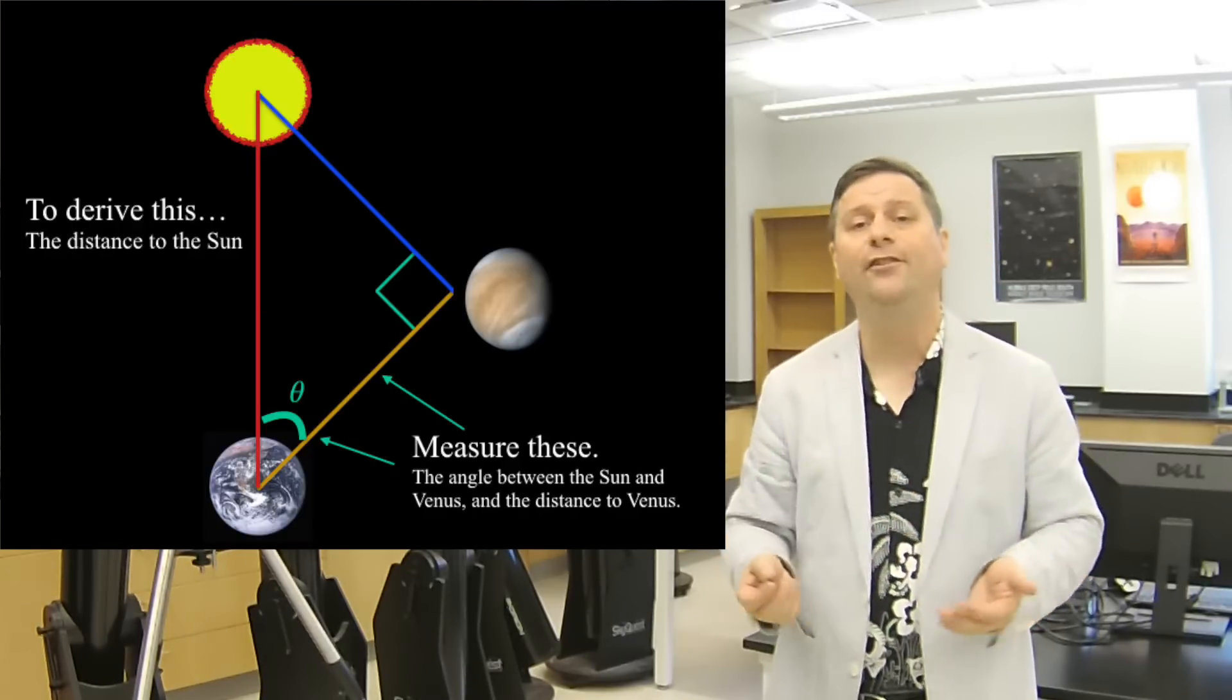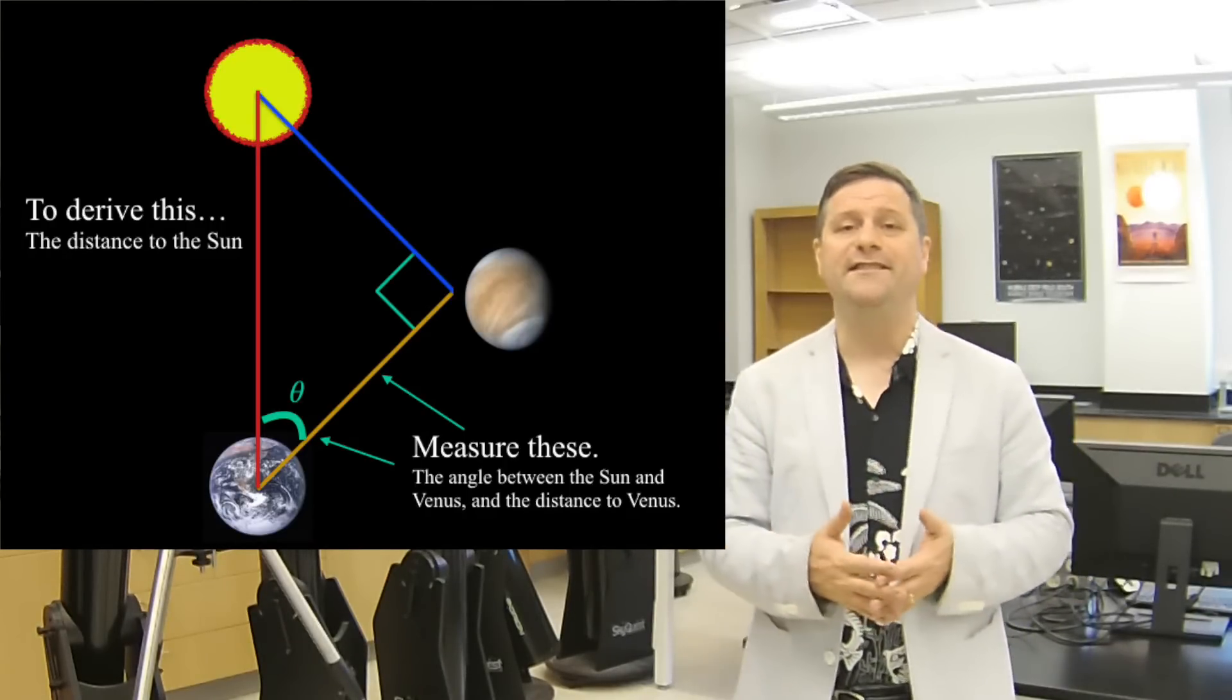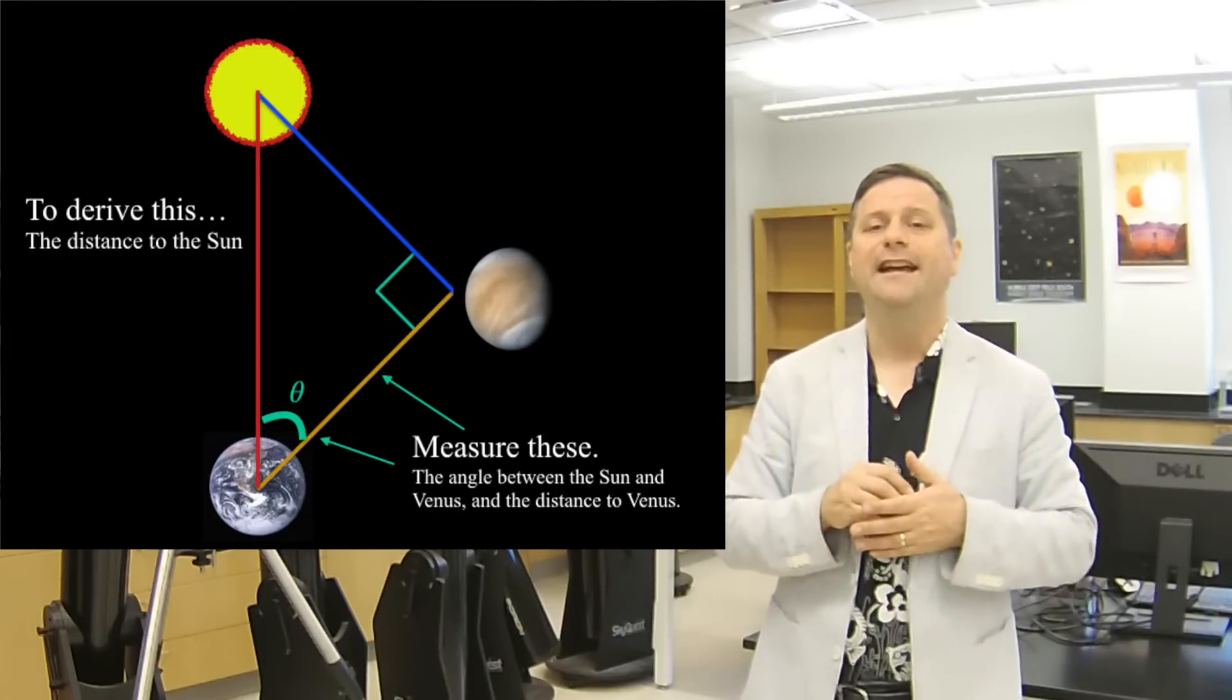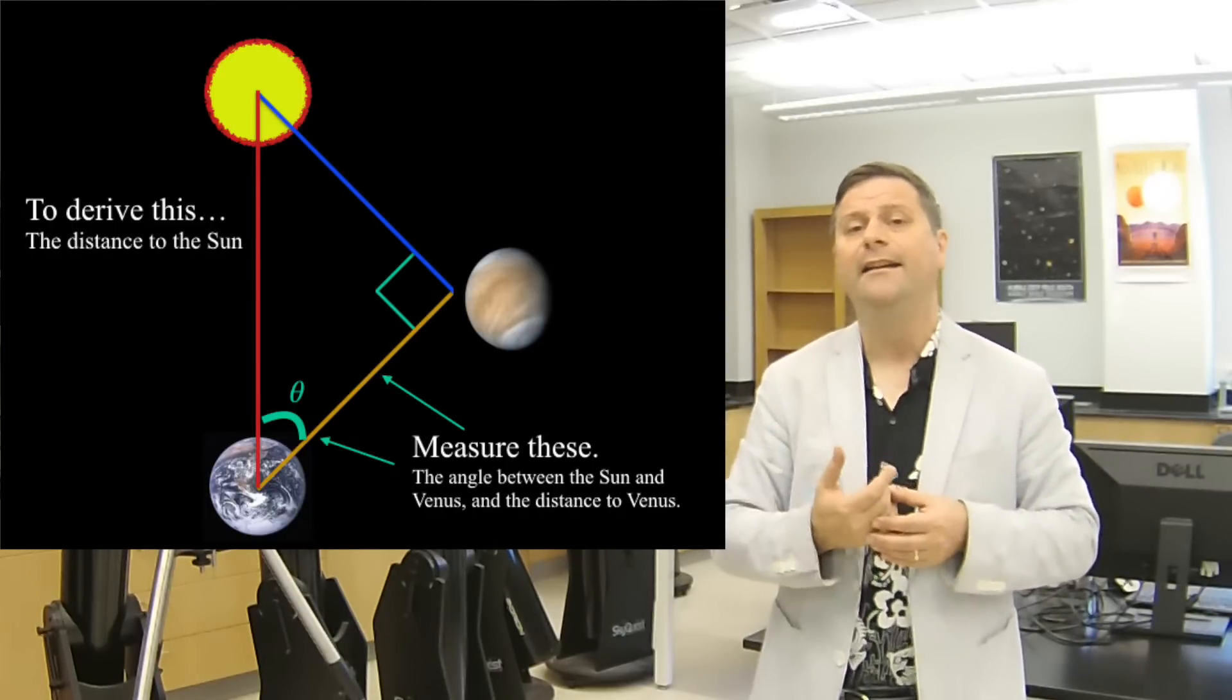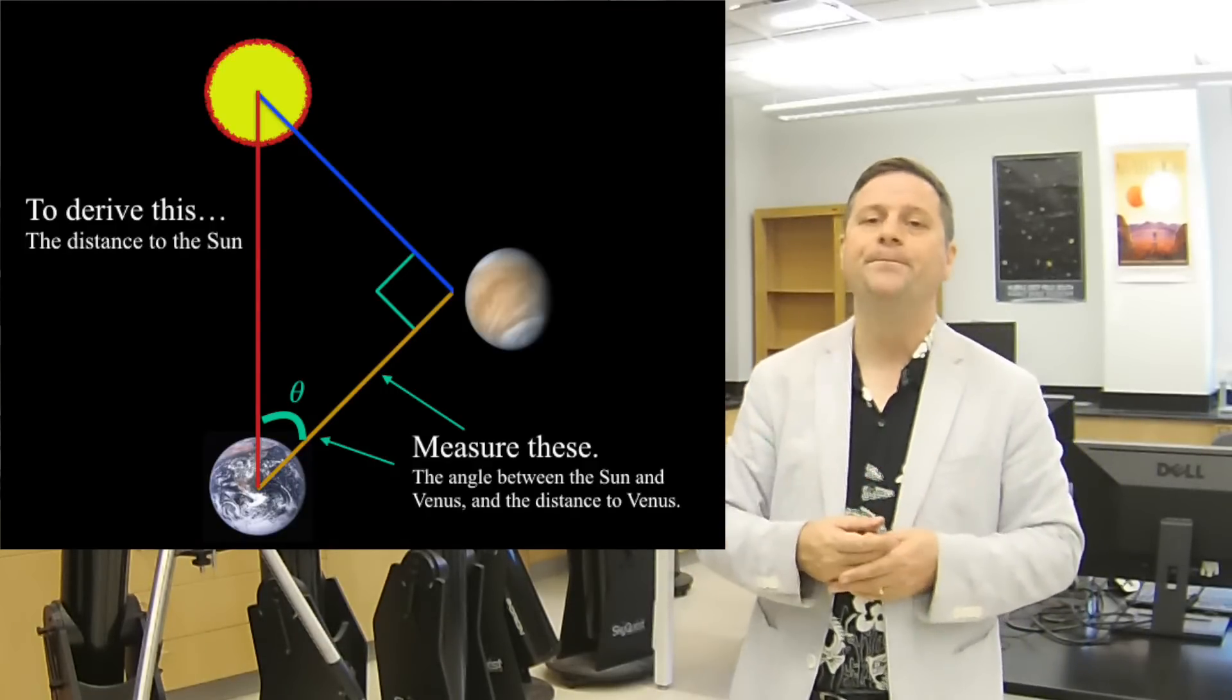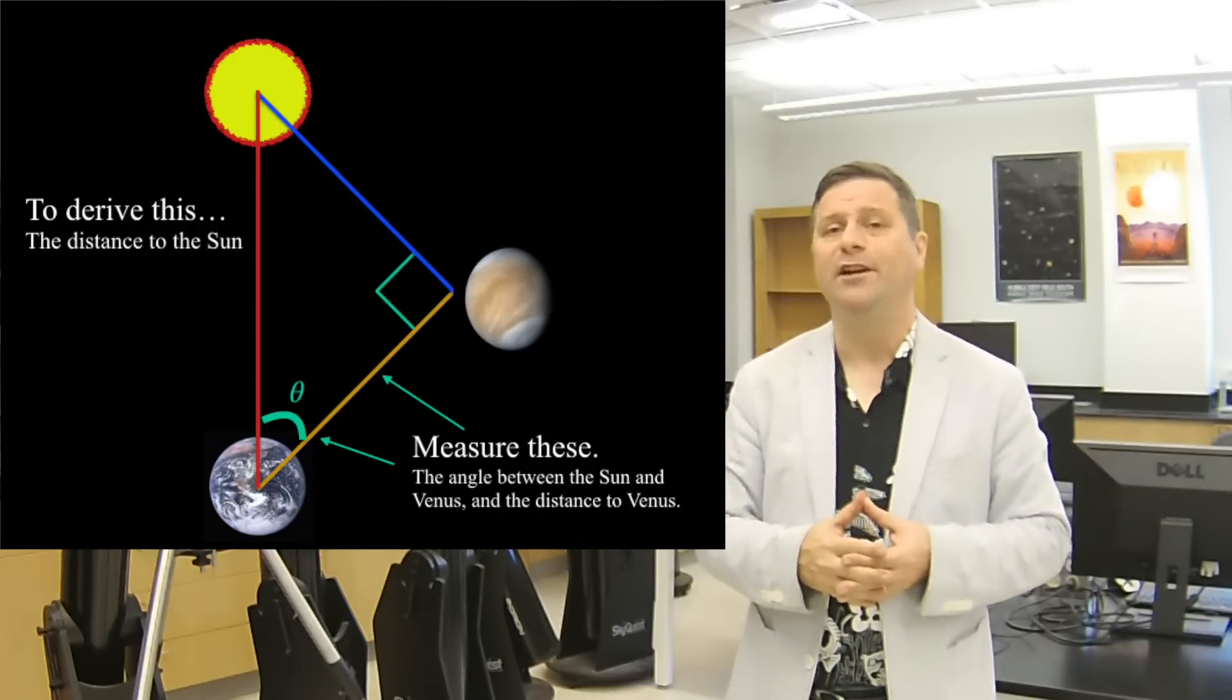We have a right triangle and all we have to do is measure the distance between us and Venus at that time. We've got a right triangle and that gives us the distance of the Sun by simple geometry and trigonometry. We can triangulate our way to the Sun by bouncing radar beams off of Venus, see how long it takes to get from there and back, and then measure the angular separation between the Sun and Venus when it's at quarter phase. What do we get? We get the distance of the Sun by trigonometry.